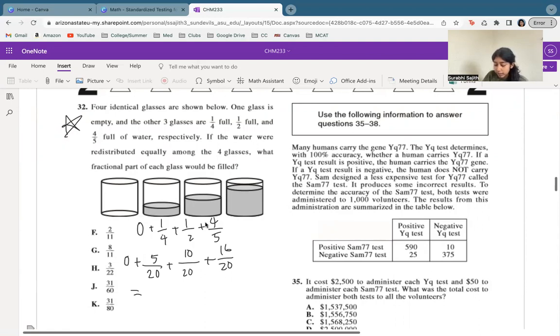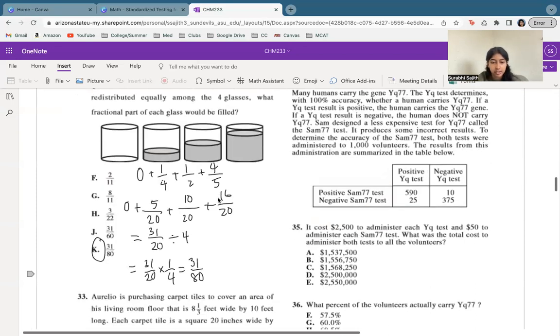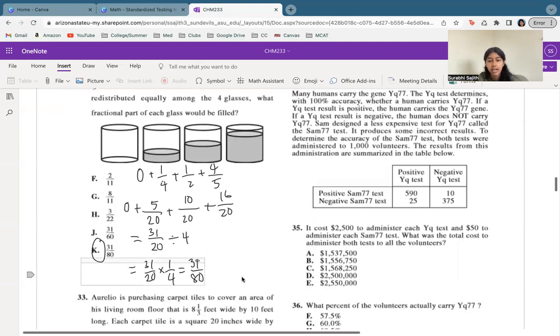Now let's add all of these together, we get 31 divided by 20. So that is the total amount of water we have. Now we're going to divide this whole thing by 4 because we want to get into 4 cups. Division is the same thing as multiplication by reciprocal, so we're going to multiply by one-fourth, and we're going to get 31 over 80. Therefore, K is our best answer.